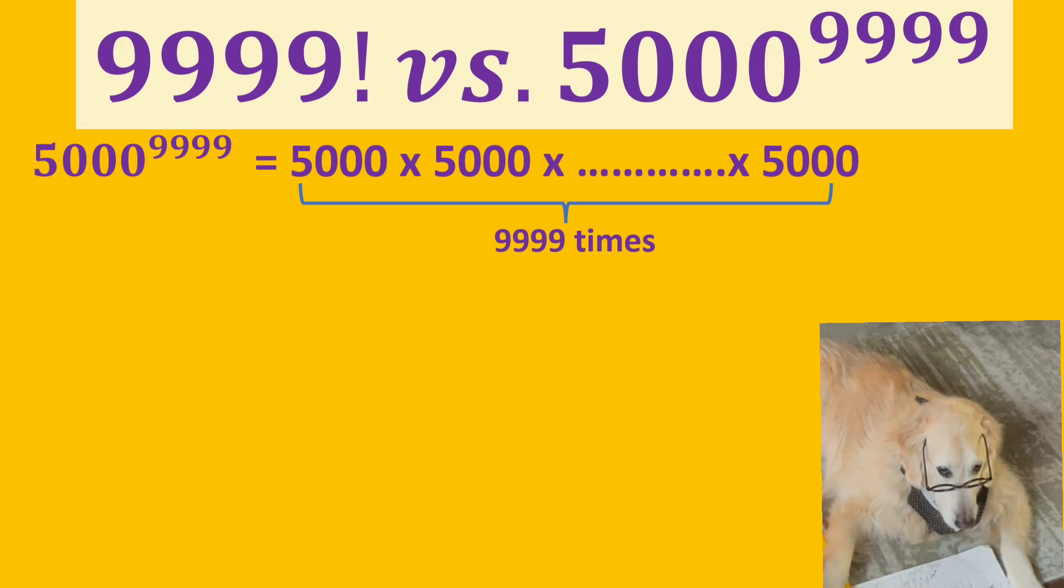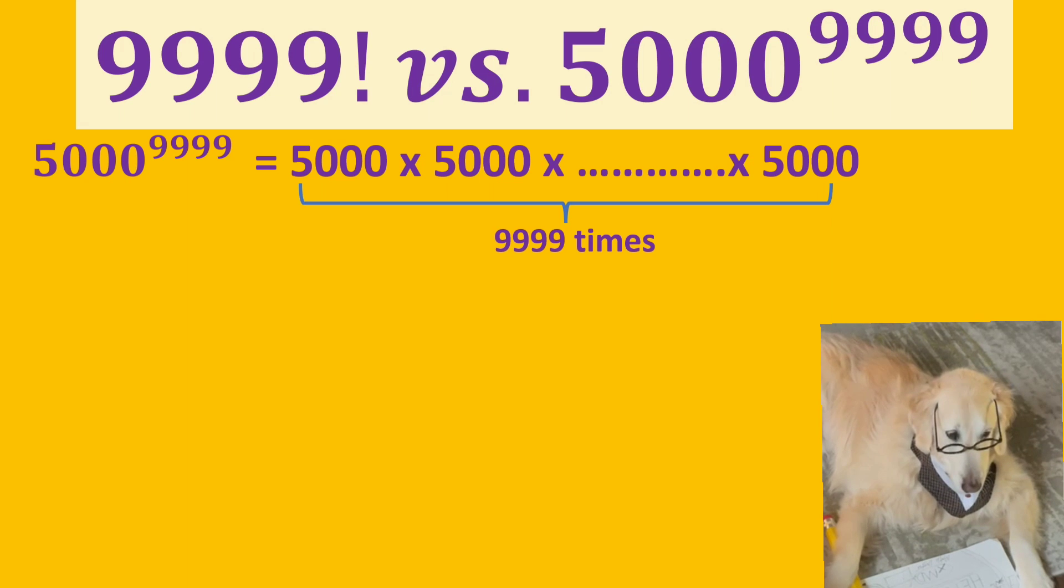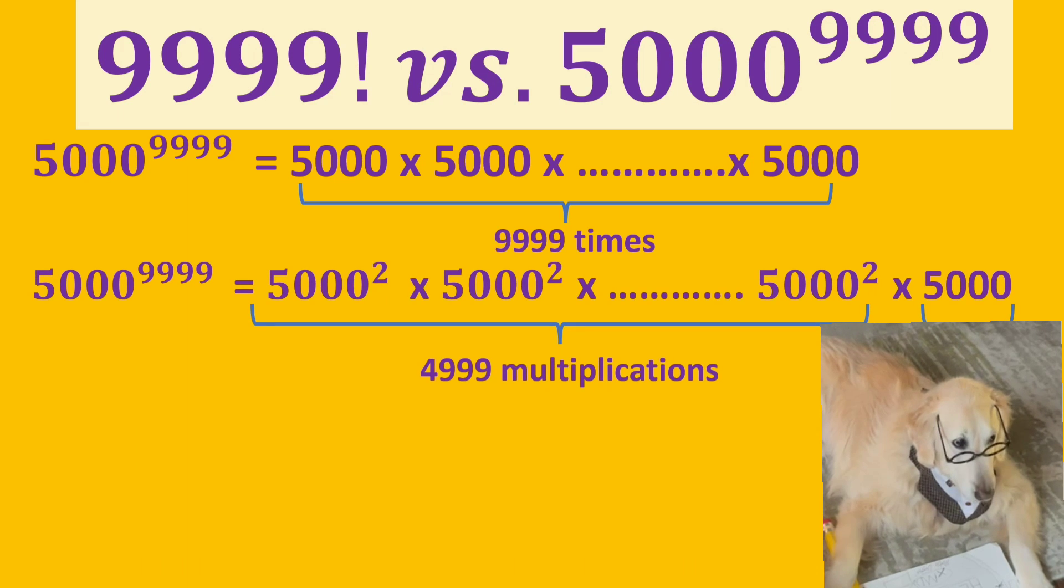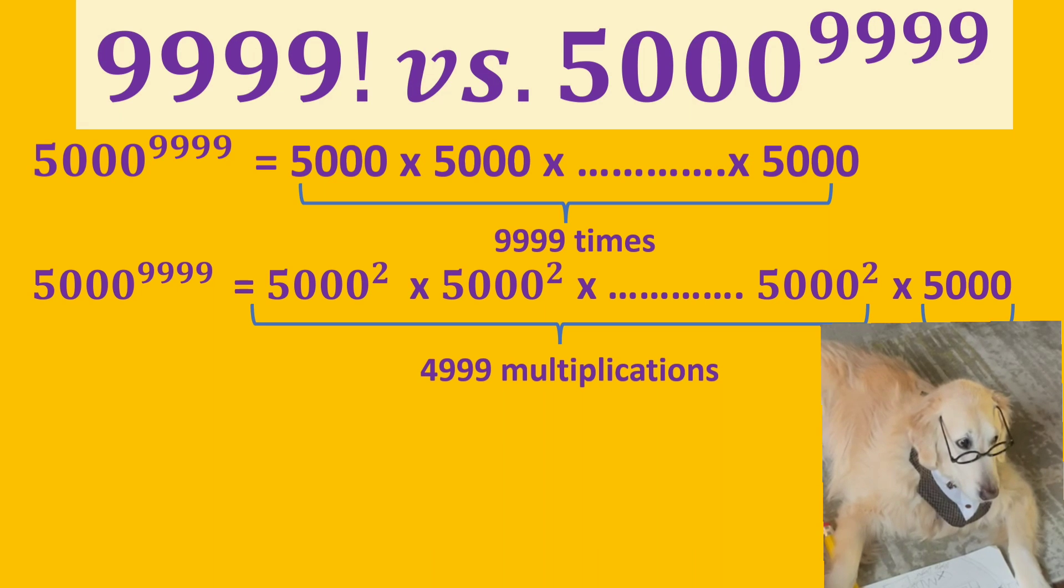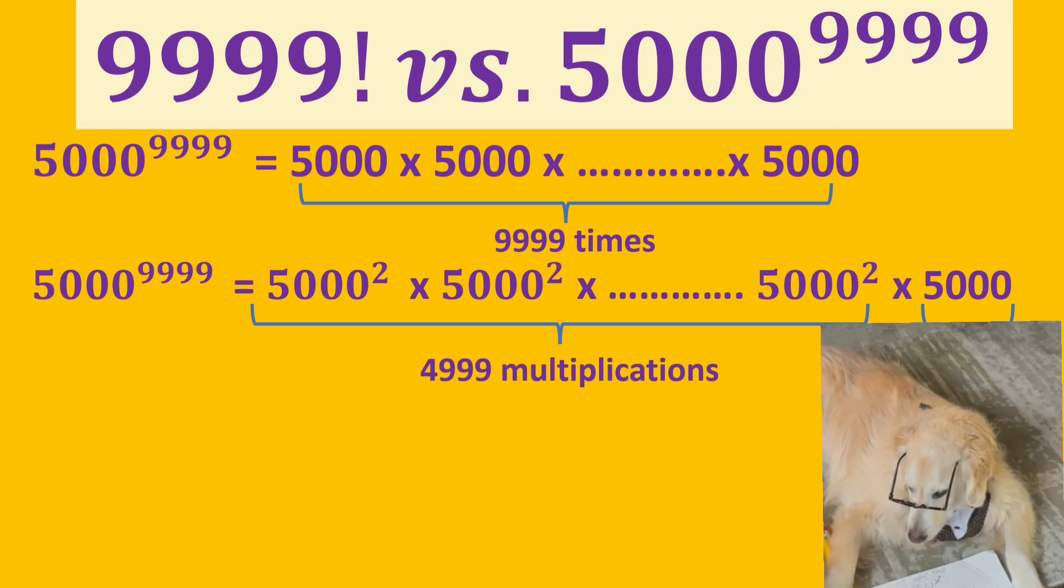First, we deal with 5000 to the power of 9999. As you can see, we can write it like this. And we can rewrite them in terms of 5000 squared. There are 4999 multiplications of 5000 squared. And of course, we also have one 5000.